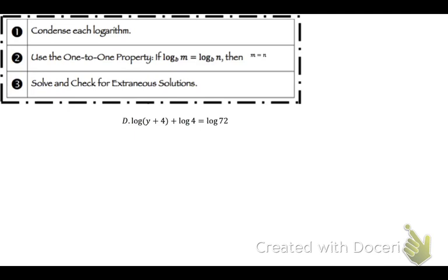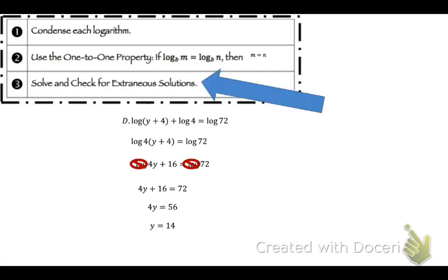This one. So first we have to condense this. Remember, addition goes with multiplication. So that's going to be log 4 of y plus 4 equals 72. And you could distribute that in if you wanted to. So it would be 4y plus 16, which is what I just did right there. Now I can cancel out those logs. So I have 4y plus 16 equals 72. So 4y equals 56, which means y equals 14. Plug it in to check. That equals 18, which is a positive, so we're good.